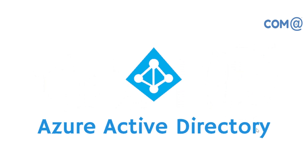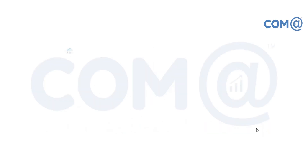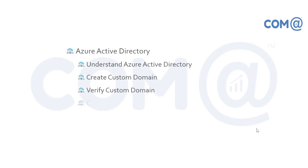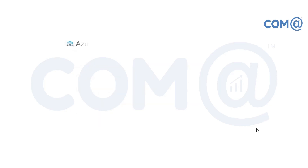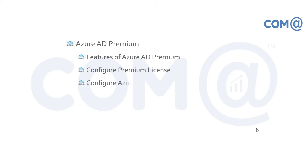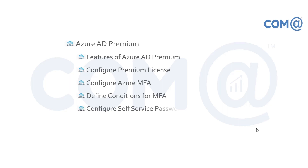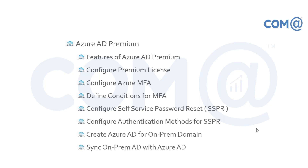Finally, we'll discuss Azure Active Directory. We'll understand what Azure Active Directory is and its features. In the practical section, we'll create and verify a custom domain, create users and groups, publish enterprise applications to users and groups, and understand Azure AD Premium — its features, how to configure the Azure AD Premium license, and how to configure multi-factor authentication.